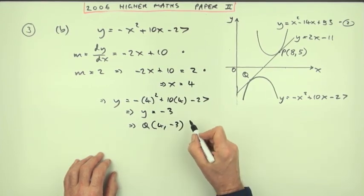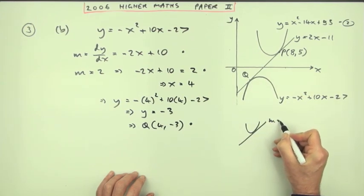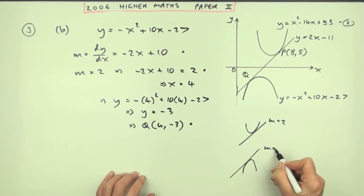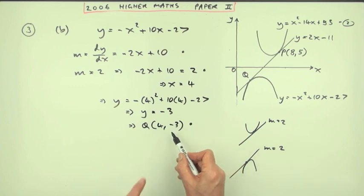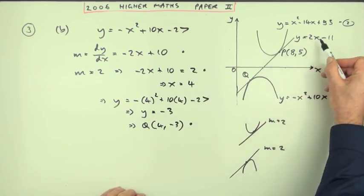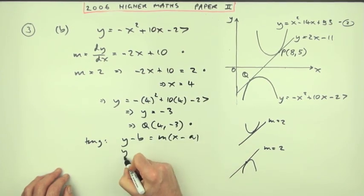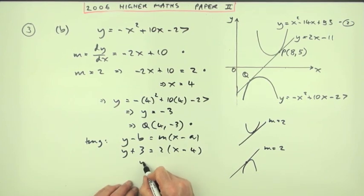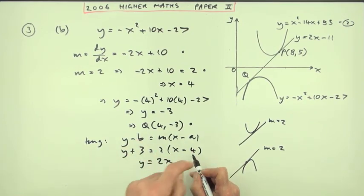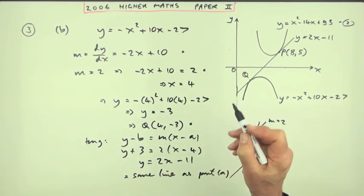That gives one mark for finding Q's coordinates. But you still have to show these tangent lines actually coincide. So form the tangent line through (4, -3) with gradient 2: y plus 3 equals 2 times x minus 4, which rearranges to y equals 2x minus 8 minus 3, giving y equals 2x minus 11. Then make a statement: this equals the same line as found in part A. That final statement earns the last mark.